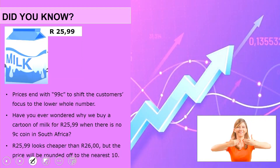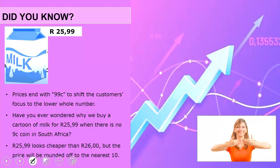Good day grade 10 learners. Our topic for today is rounding. Did you know that prices end with 99 cents to shift the focus of customers from the whole number? So basically when the price of a pint of milk is R25.99, you don't even see that this is actually R26. Because R25.99 looks much cheaper than R26. Therefore rounding is the most important aspect in the business world, because basically every amount is rounded off to the nearest 10 cents — the minimum coin we have in South Africa.